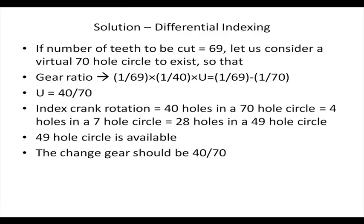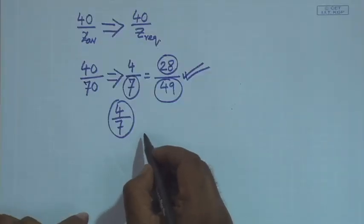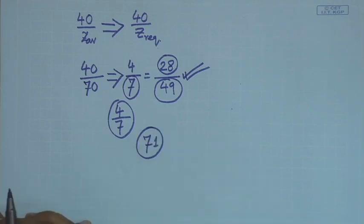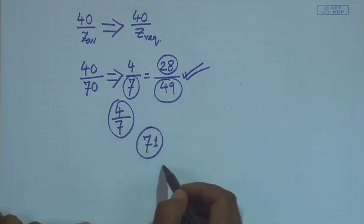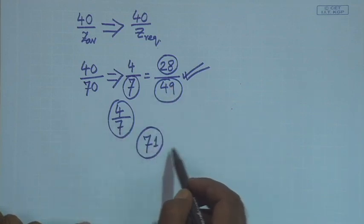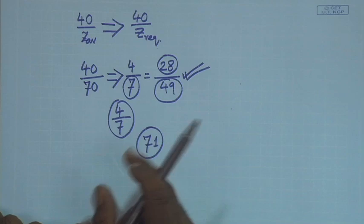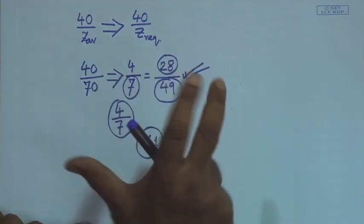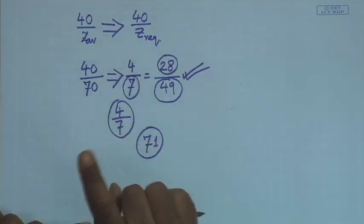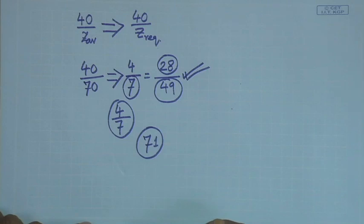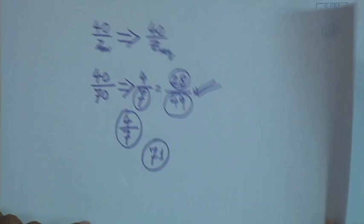Next, a corollary: if you have this same problem on the same machine, how would you cut 71 teeth? The 71-hole circle can be cut with the same setup — only an extra pinion would be required to change the direction of rotation. Instead of crank rotation and plate rotation taking place in the same direction, they will be opposing each other when cutting a 71-tooth gear. Other things remain the same.